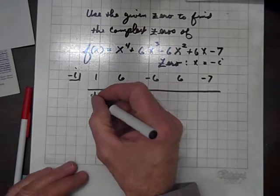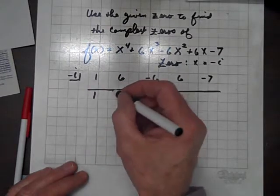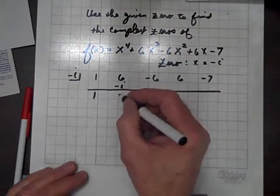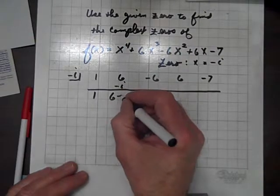Bring down the 1, multiply 1 by negative i, and we get negative i. Add these up and we get 6 minus i.